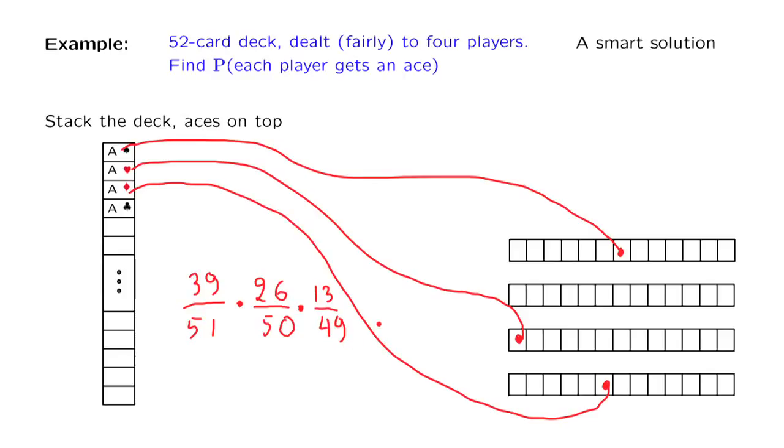And so this is the answer to our problem. This expression looks very different from the expression that we derived a little earlier. But you can do the algebra, the arithmetic, simplify the answer, and you will verify that indeed it's exactly the same answer. And in case you're curious, the numerical value turns out to be 0.105. So there's about 10% that when you deal the cards in bridge, each one of the players is going to end up by having exactly one ace.